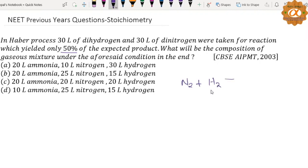This becomes a reversible process forming NH3. The balanced equation is: one volume of nitrogen reacts with three volumes of hydrogen to produce two volumes of ammonia. Given 30 and 30, that means hydrogen is the limiting reagent.